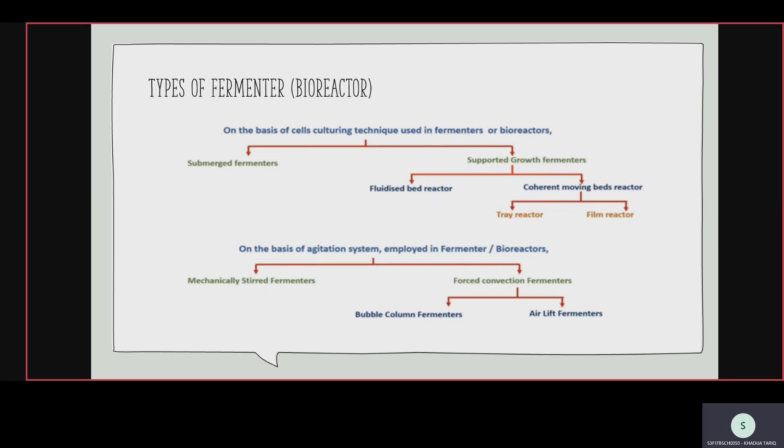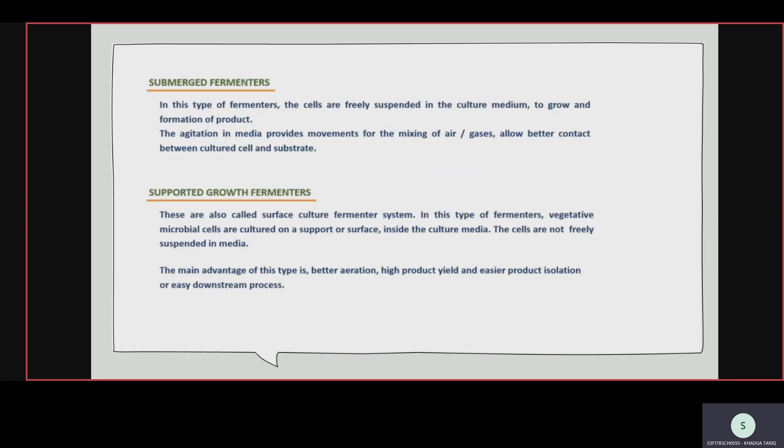On the basis of agitation: two types — mechanically stirred fermenters and forced convection fermenters. Forced convection fermenters are divided into bubble column fermenters and airlift fermenters. Regarding submerged fermenter vs supported growth fermenter: in submerged fermenter, cells are freely suspended in the culture medium to grow and produce product. In supported growth fermenter, microbial cells are not freely suspended — they need a support or surface for culturing.